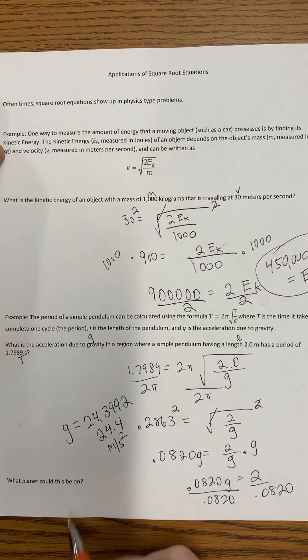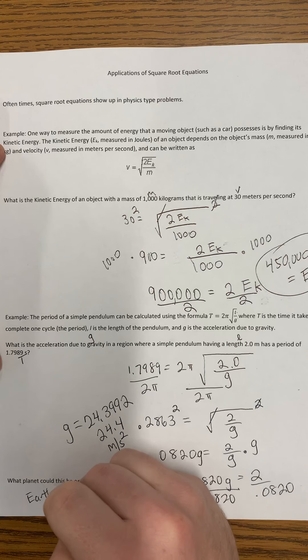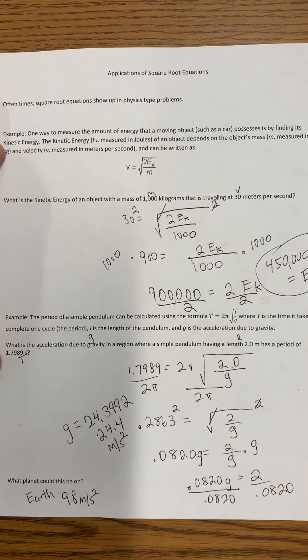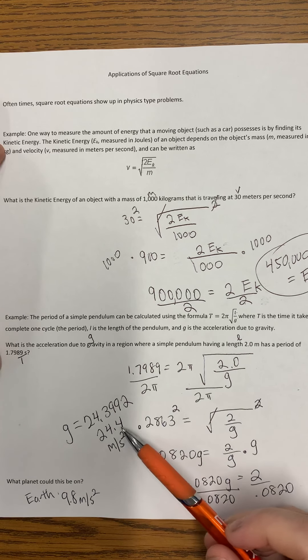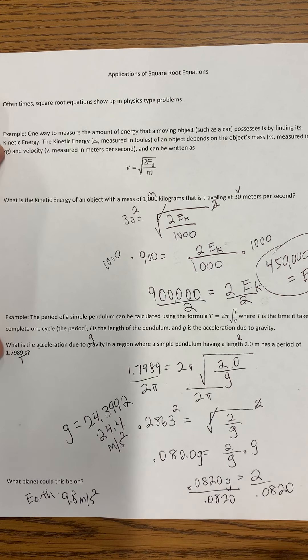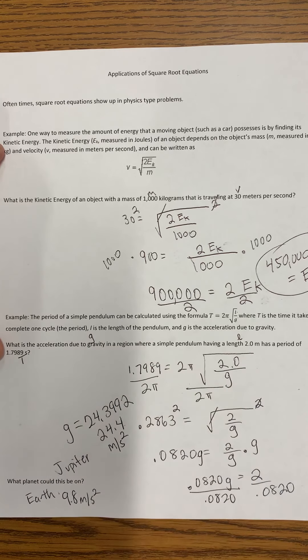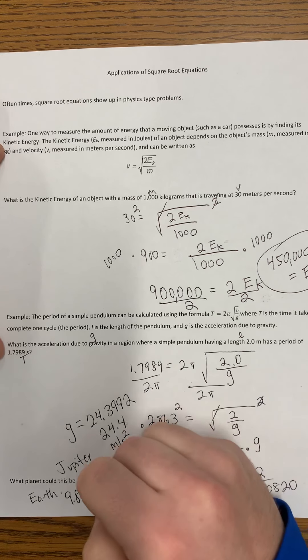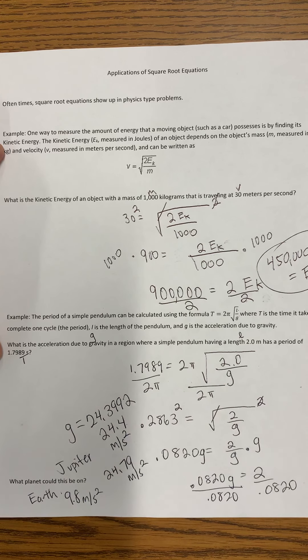What planet could this be on? If you think about gravitational pull, Earth is 9.8 meters per second squared. This planet's got to be much larger because it's got a much larger gravitational pull, so probably something like Jupiter. If you look up the exact measurement for Jupiter, Jupiter is 24.79 meters per second squared.